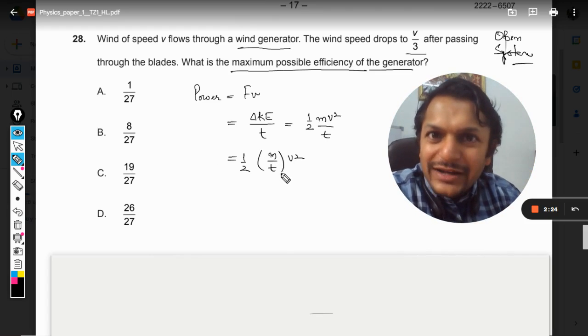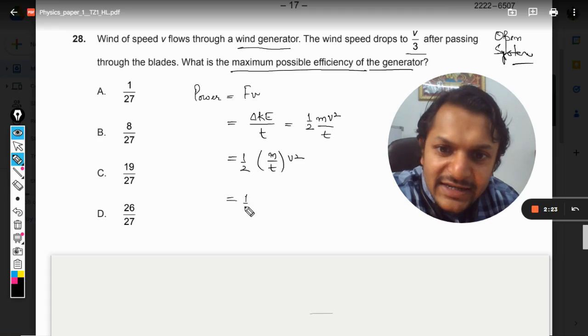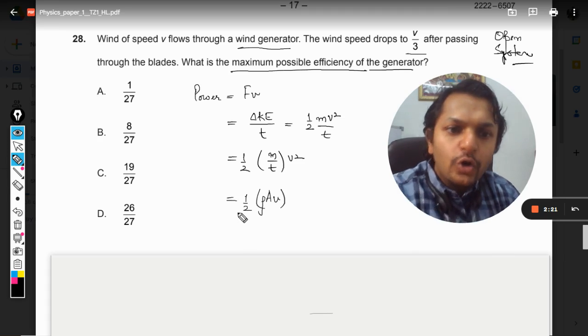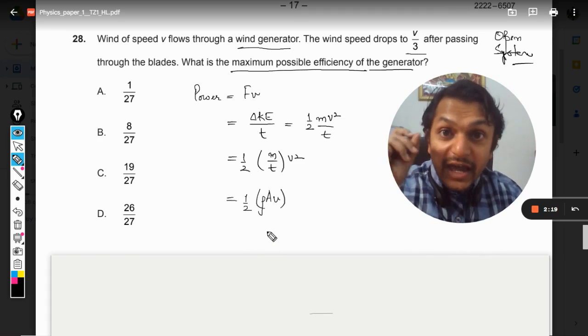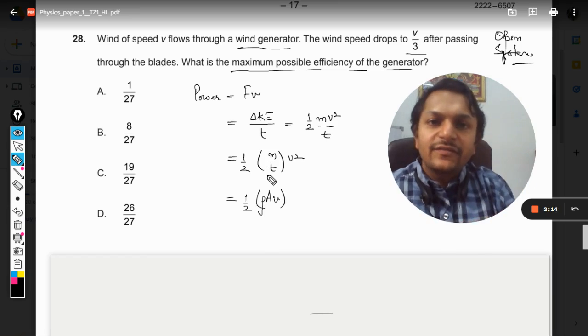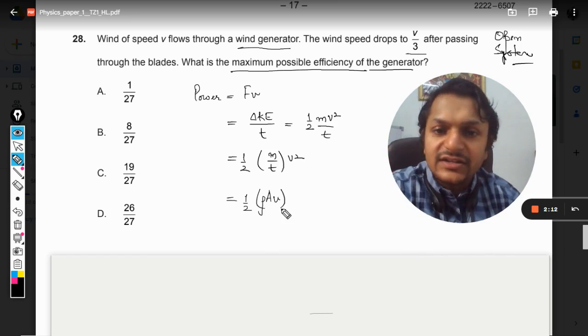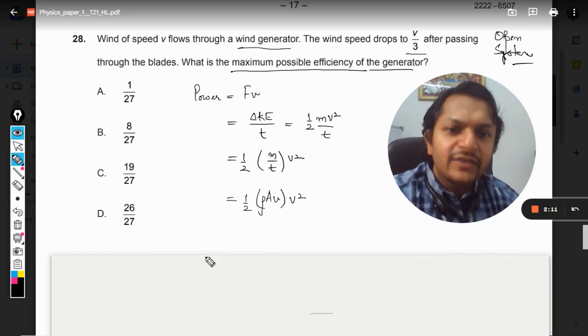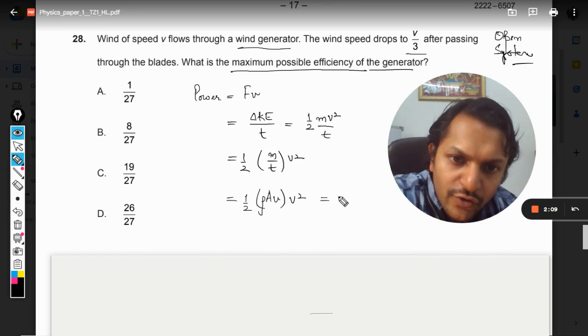Mass flow rate is given by ρAv, where ρ is the density of the fluid, A is the area of cross-section of the blades, and v is the velocity. Multiplying it further with v², our formula becomes P = (1/2)ρAv³.